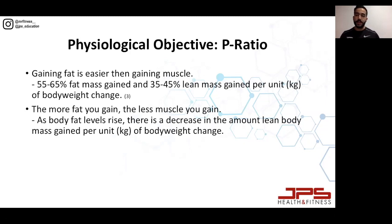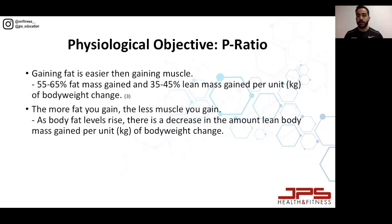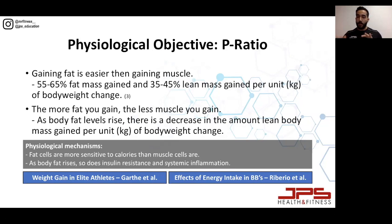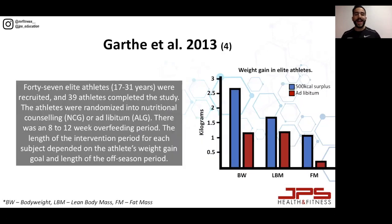The more fat you gain, the less muscle you gain, so your P-ratio is very much determined by how much body fat you are starting off with. As body fat levels rise, there seems to be a decrease in lean body mass gained per unit of body weight change. The physiological mechanisms are that fat cells are more sensitive to calories than muscle cells are, and as body fat rises so does insulin resistance and systemic inflammation — both of which can compromise your ability to grow muscle.